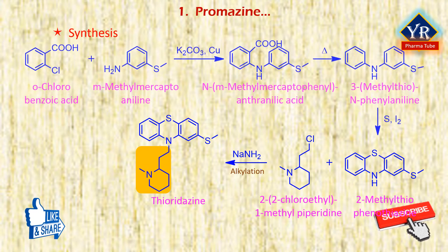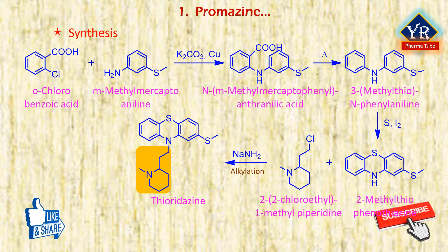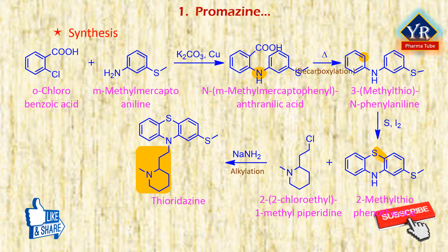In an alternative method, in the first step, N-(m-methylmercaptophenyl)aniline is prepared by condensing m-methylmercaptoaniline with the potassium salt of orthochlorobenzoic acid and decarboxylating the resultant product — N-(m-methylmercaptophenyl)anthranilic acid — by heating. Treatment of this compound with sulfur and powdered iodine produces 3-methylmercaptophenothiazine, which upon condensation with 2-(2-chloroethyl)-1-methylpiperidine using sodium amide and xylene produces thioridazine.